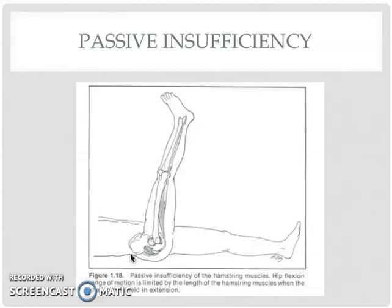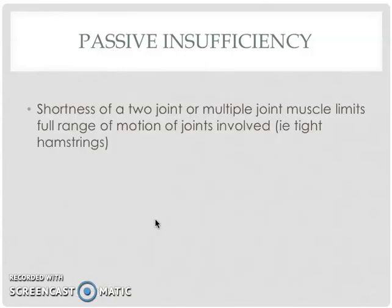For passive insufficiency, a muscle like the hamstring that crosses both the hip and the knee joint will have limited knee extension if the hip is in full flexion. When the hip is in full flexion, that is already lengthening the hamstrings. As we extend the knee, it further lengthens those muscles. The take-home message is that when we are dealing with a muscle that crosses more than one joint, we need to be aware of that and take all of the joints the muscle crosses into consideration. We will discuss this at length in a lab.